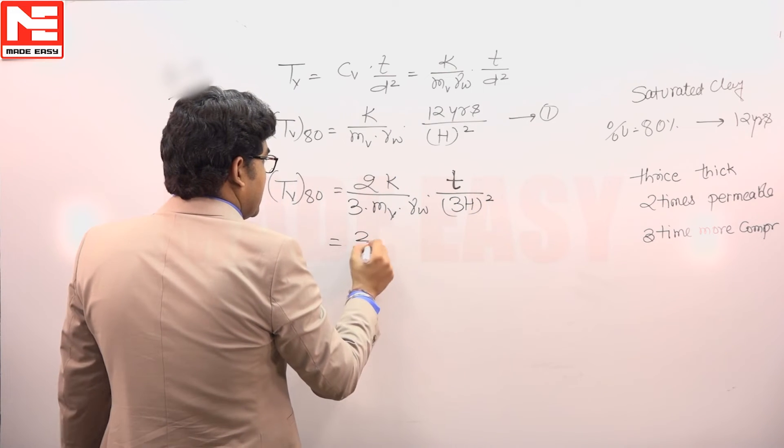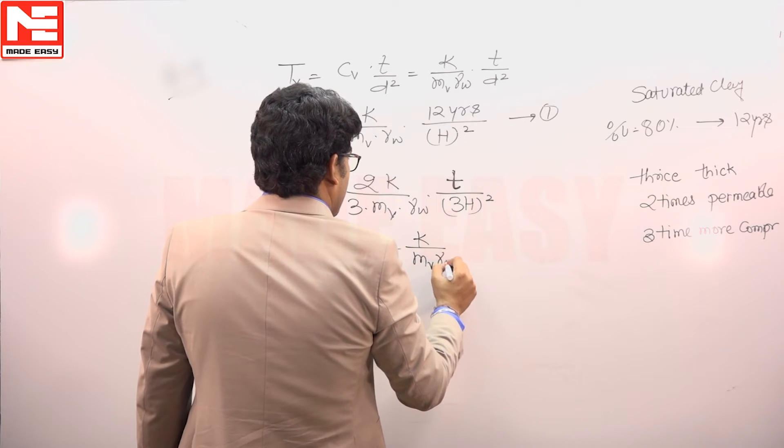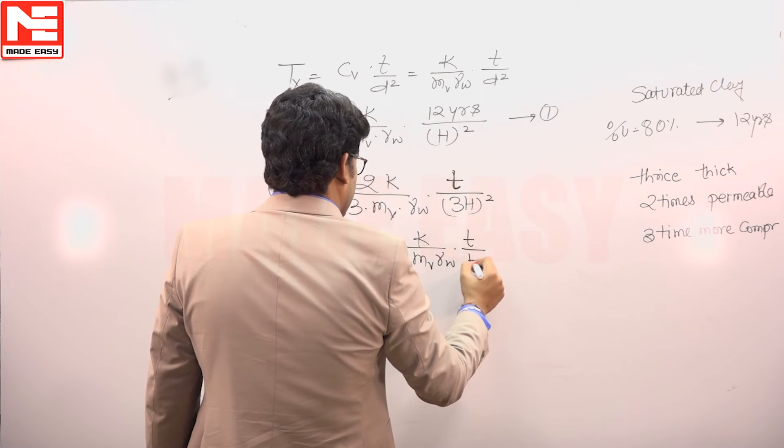So by this relation we can say that 2 by 3 into 9 K upon MV gamma W into T upon H squared.